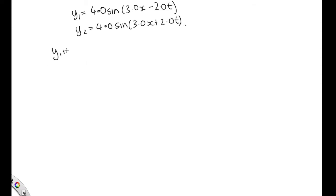y1 plus y2 equals 2A, which is 2 times 4, or 8.0. Inside the sine, we add these together and divide by 2, giving us 3.0x times cosine. We subtract these and divide by 2, giving us 2.0t. This is the wave equation for our standing wave.